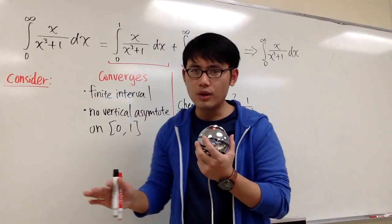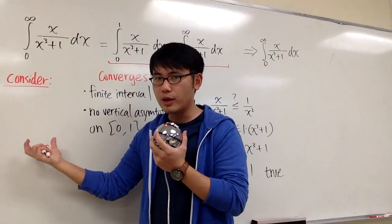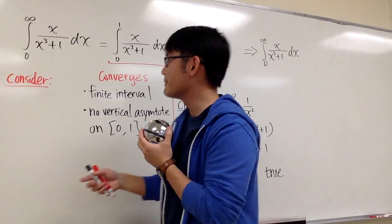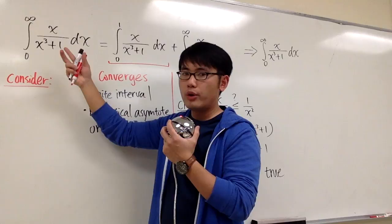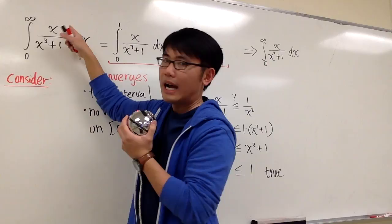Here's the strategy. We are going to come up with another improper integral that's similar, and then hopefully we can make a comparison. To reduce this integral, we pick out the dominating part on the numerator and on the denominator. When x is approaching infinity, we look for the highest power of x on the top and the highest power of x on the bottom.